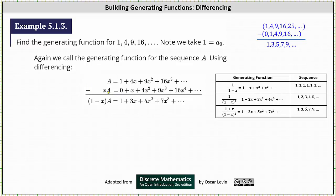Then we'd have plus x times 4x, which gives plus 4x squared, and plus x times 9x squared, which gives plus 9x cubed, and so on. Now we subtract the two equations. On the left we have a minus xa, and factoring out the a gives the quantity 1 minus x times a. On the right, as expected, we get the generating series for 1, 3, 5, 7, 9, ... Specifically: 1 minus 0 is 1, plus 4x minus x is plus 3x, plus 9x squared minus 4x squared is plus 5x squared, and so on.